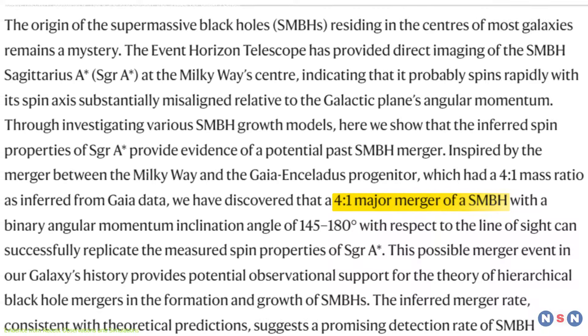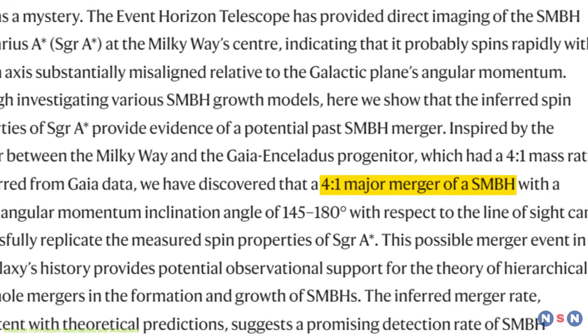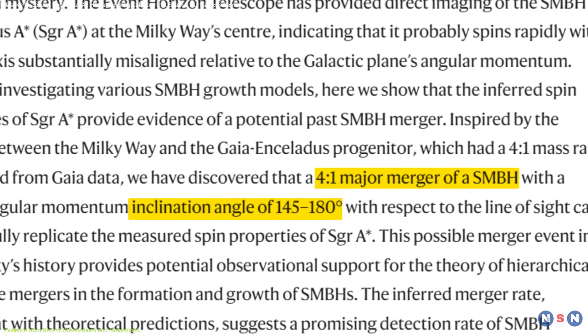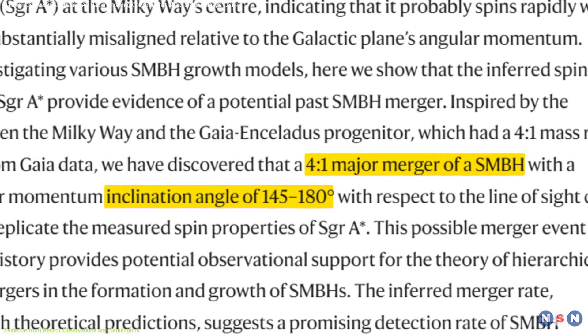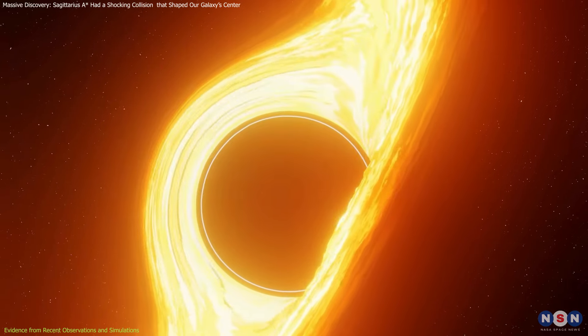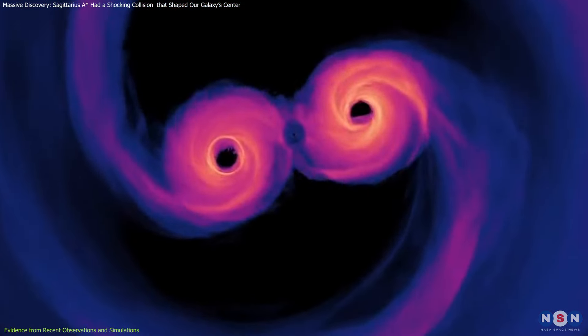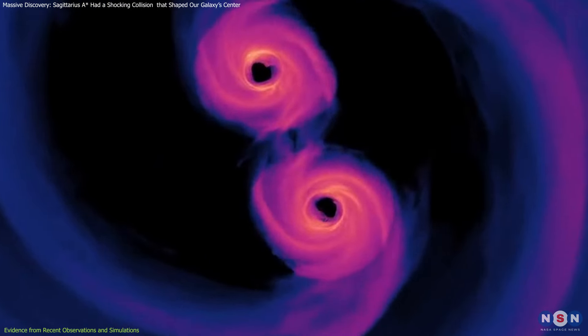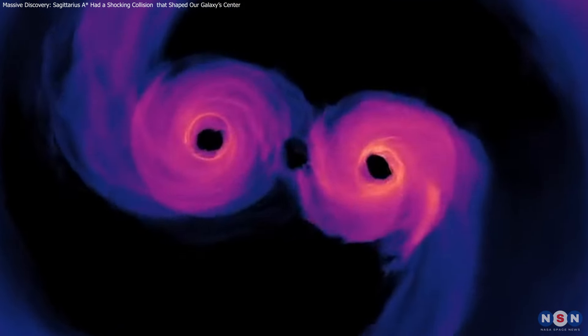By using sophisticated simulations, the study demonstrated that a 4 to 1 mass ratio merger with an angular inclination of 145 to 180 degrees could accurately reproduce the observed spin properties of Sagittarius A-Star. This scenario suggests a dramatic interaction that significantly altered Sagittarius A-Star's mass and spin orientation.